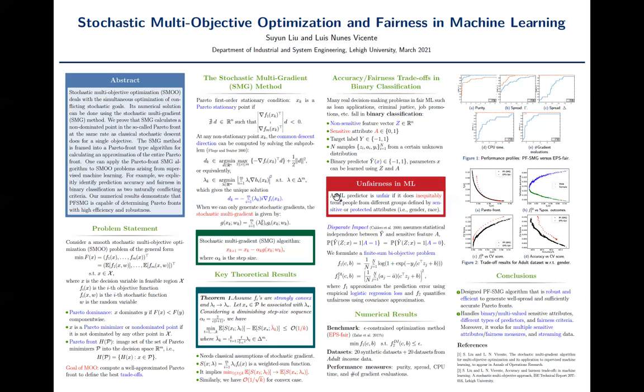We say a machine learning predictor is unfair if it does treat different demographic groups or different sensitive groups differently. One of the famous fairness measures is called disparate impact. It essentially assumes that the predictor Y hat should be independent from the membership information A. So we can express it as an equation using the conditional probability. And the difference between the two terms are called parity score.